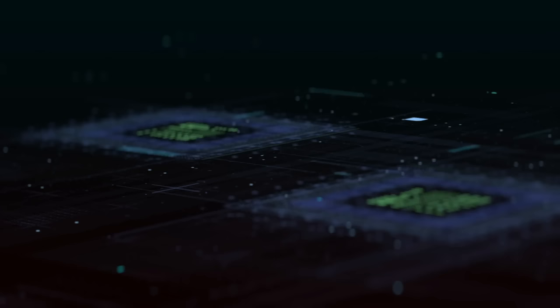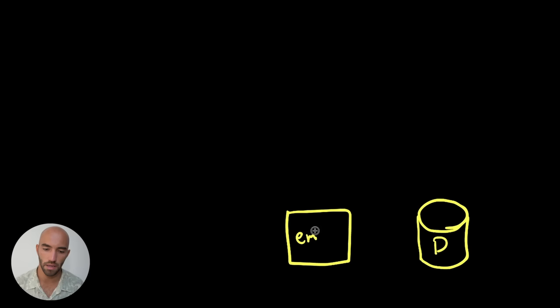In this video we're going to take a look at how we can do retrieval augmented generation as an example of the sort of capabilities we can build out within NeMo Guardrails. Typically when building out a RAG pipeline for LLMs we'd take two possible approaches, both using similar components: a vector database (Pinecone), and an embedding model (text-embedding-ada-002). Documents are fed through the embedding model and stored within Pinecone.